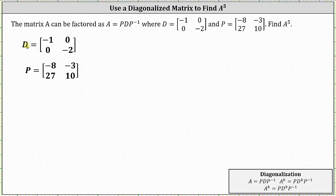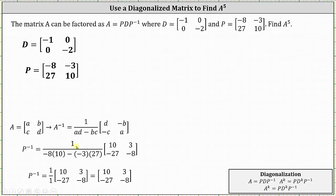Because we are given matrix D and matrix P, the first step is to determine the inverse of matrix P, which I've shown below using the inverse formula for a two by two matrix. P inverse is equal to the matrix 10, 3, negative 27, negative 8.